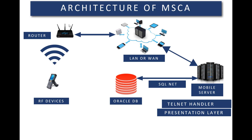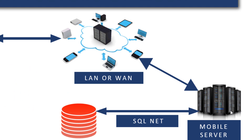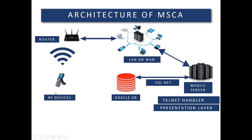The device communicates with your router in the facility, which is connected to your LAN or WAN — the local area or wide area network. That connection then goes through the internet to the mobile server, depending on where your Oracle servers are located. Within that topology, the mobile server is connected to the Oracle database server, and they maintain real-time communication between them.